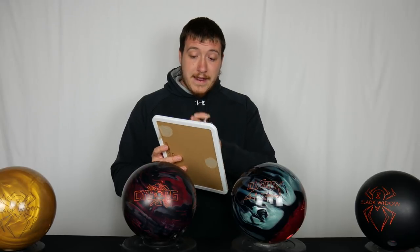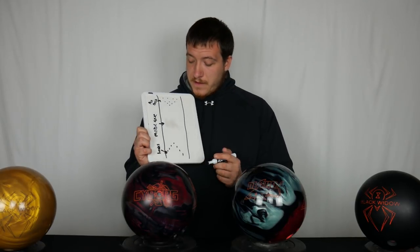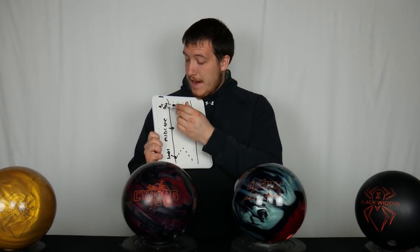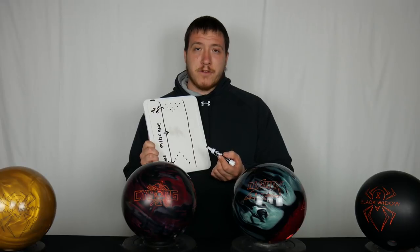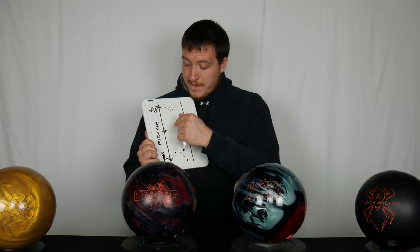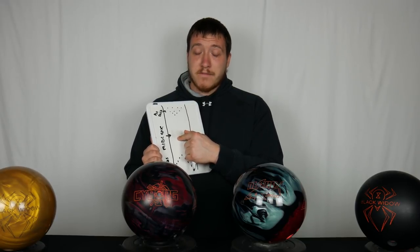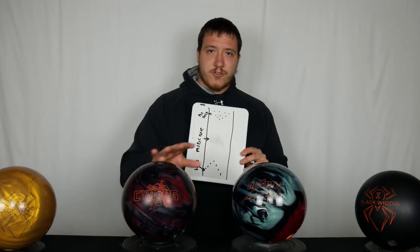I have a handy dandy whiteboard here and I'm going to draw a bowling lane and write some terminology so you can understand what I'm talking about. This is a poorly drawn bowling lane - the areas here are heads, mid lane, and pin deck. The pin deck is the ten little white sticks at the end of the lane you're trying to knock down. These are the markings and arrows at the front of the lane, with 55 feet in between.